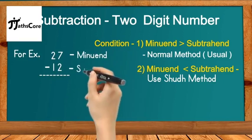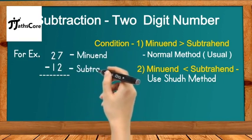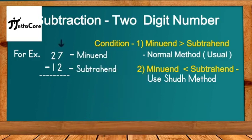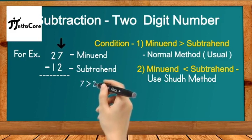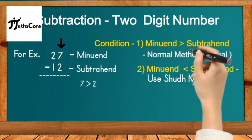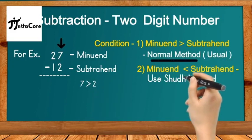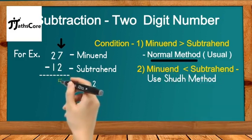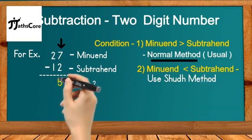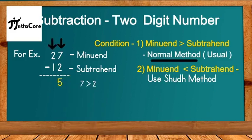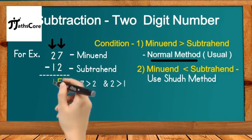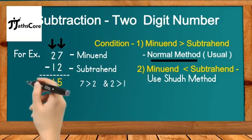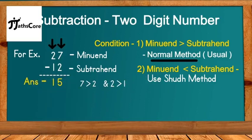The first example is 27 minus 12. Here 27 is the minuend and 12 is the subtrahend. The unit place digit of the minuend is 7 and of the subtrahend is 2. Since 7 is greater than 2, the minuend is greater than the subtrahend, so we use the normal method. 7 minus 2 is 5, and 2 minus 1 is 1, giving the answer 15.